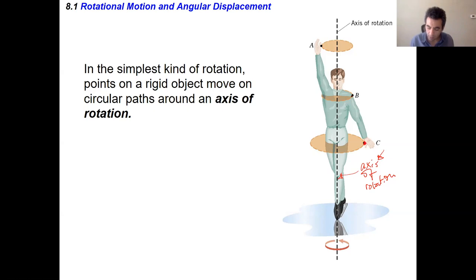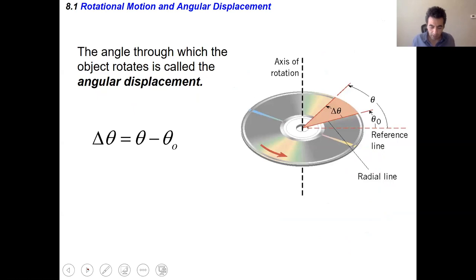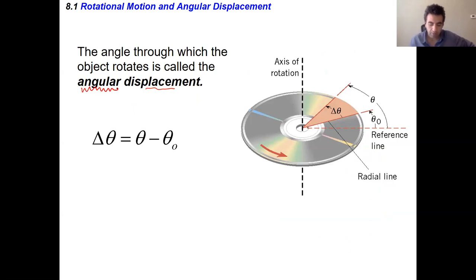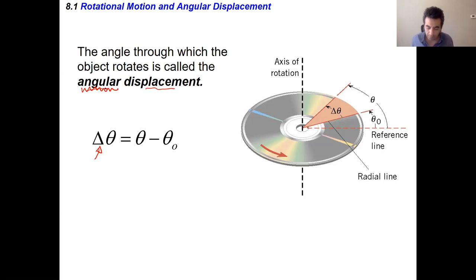All of the points on the different parts of the object undergo circular motion, but the circles are not necessarily the same size — different radii. The first variable, just like in regular kinematics, is displacement. Here it's angular displacement: the change in angle. The angle theta counts as the position — that's the analogy. So angular displacement is the change in angle rather than the change in position.